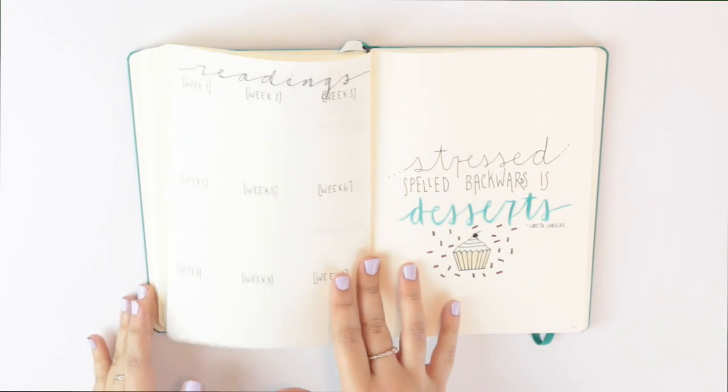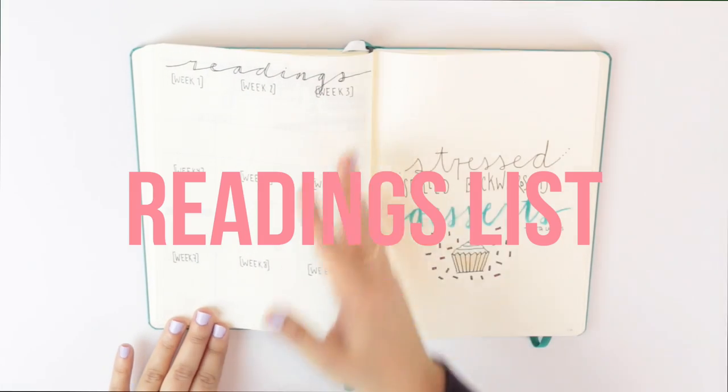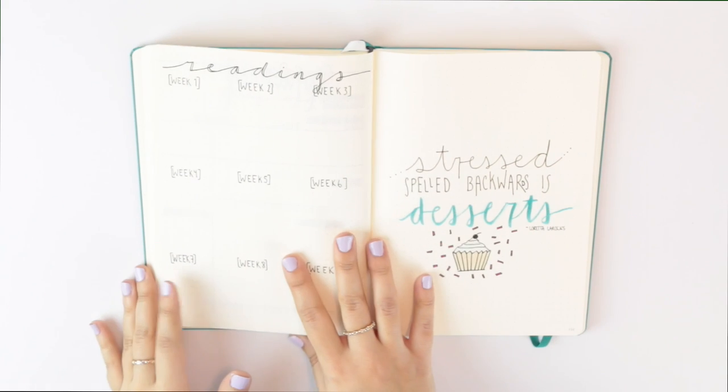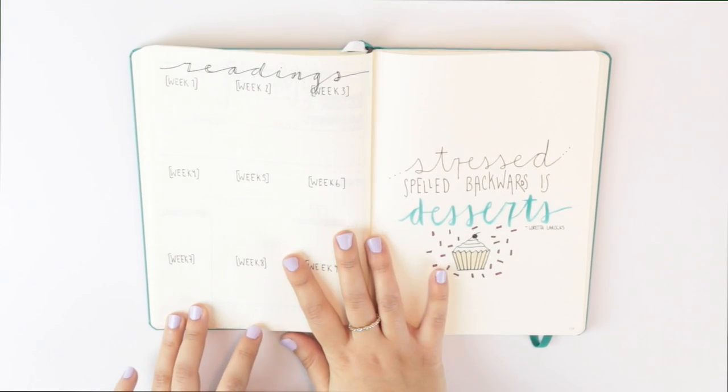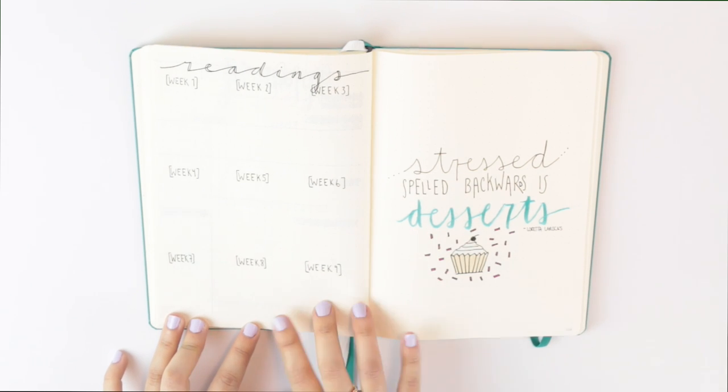And then we are moving on to my last two pages, which consists of my readings page and a fun little quote to make me forget about my struggles. My readings page is just a section where I put week 1, 2, 3, 4, 5, 6, 7, 8, and 9.